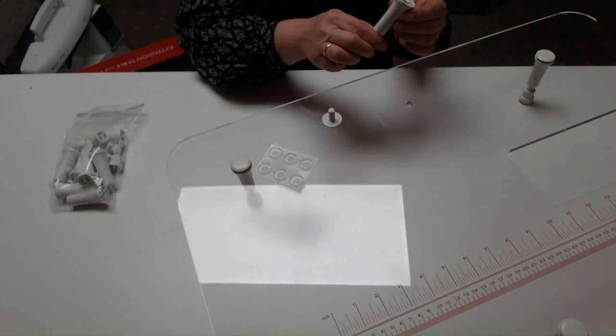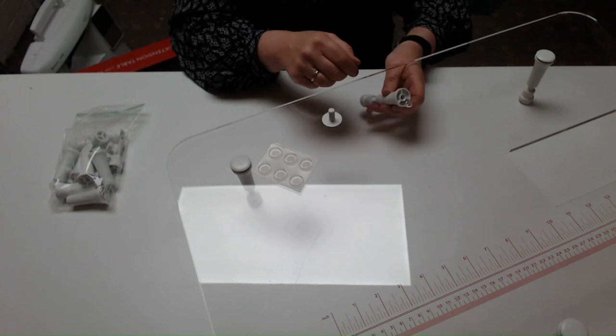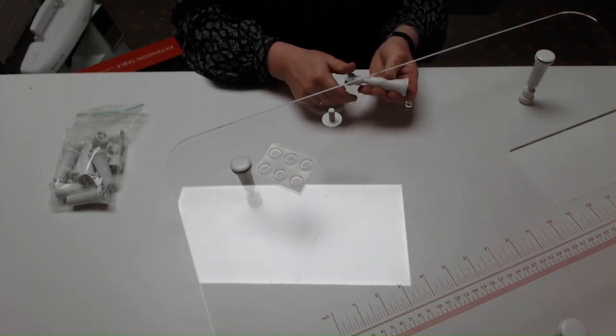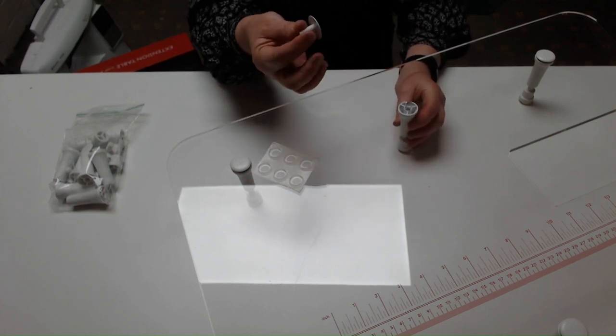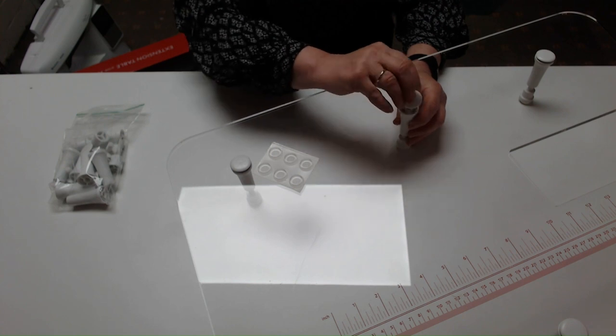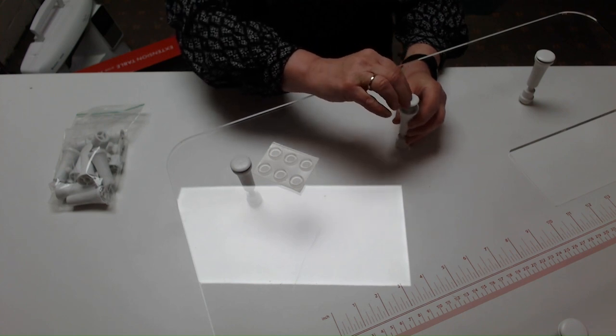Then you take this piece underneath the table, place it underneath, and then take this piece here on top. It just slides down—it's like a big screw—and then just turn it and tighten it up.